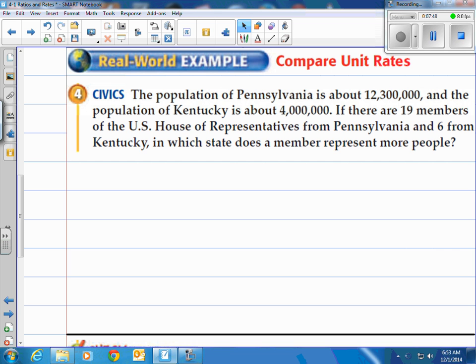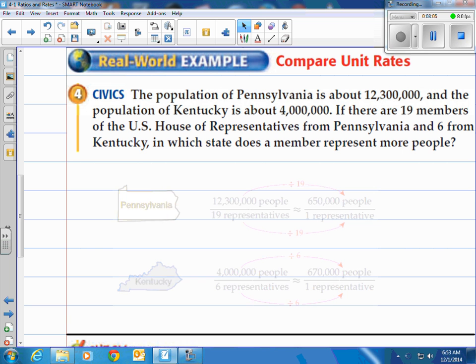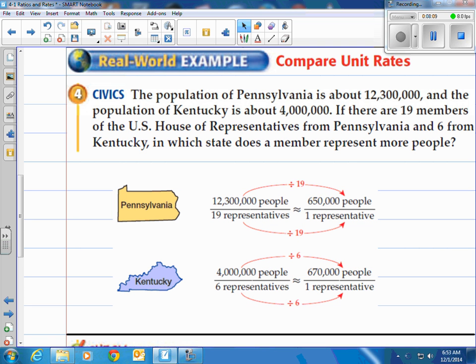Alright let's take a look at this. The population of Pennsylvania is about twelve million three hundred thousand and the population of Kentucky is about four million. If there are 19 members of the U.S. House of Representatives from Pennsylvania and six from Kentucky, which state does a member represent more people? We take our twelve million three hundred thousand people and divide by the 19 representatives for Pennsylvania. We end up with 650,000 people per one representative. In Kentucky you take the four million and divide by six representatives and end up with 670,000 people per one representative. Therefore, a member represents more people in Kentucky than in Pennsylvania, roughly about 20,000 more people.